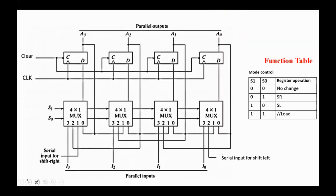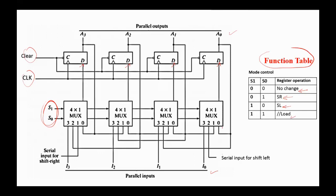Here we have the circuit diagram for a 4-bit universal register. It has 4 D flip-flops, 4 input lines, 4 output lines, a clear and a clock pulse. It works according to the given function table: if the select controls are 0,0 then store; on 0,1 shift right; on 1,0 shift left; on 1,1 parallel load. We need 4 multiplexers each of size 4-to-1, and the outputs of the multiplexers are applied to the inputs of the flip-flops. Since we have 4-to-1 multiplexers, we need two select signals to determine which input of the multiplexer is transferred to the flip-flop.